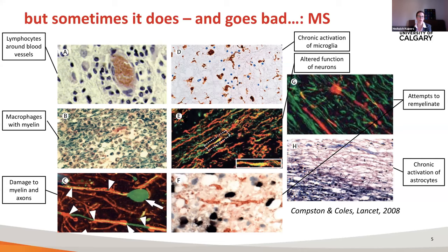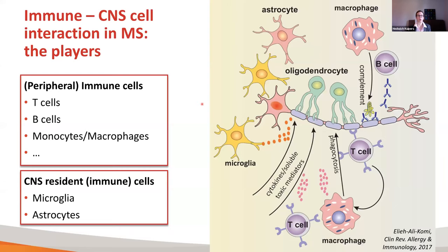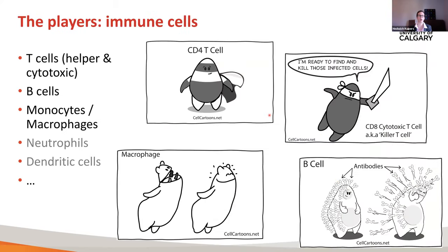Let's zoom in on these different cell types. We have an interplay between cells that normally are in the brain — neurons with myelin around the axons, oligodendrocytes making the myelin — and then around these we have microglia and astrocytes. These are two cell types that are very important in talking to immune cells. Then we have immune cells found in MS lesions: macrophages, T cells, B cells, and all kinds come together in these MS lesions.